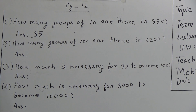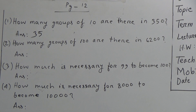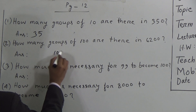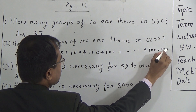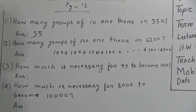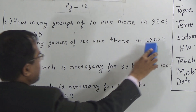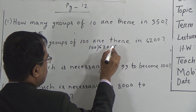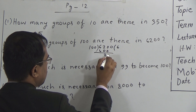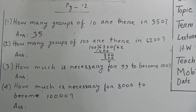Now question 2: how many groups of 100 are there in 6200? That means, for getting 6200, how many 100s have to be added? Similar to question 1, we divide 6200 by 100. In 620, we can give 6 times — that gives 600. Subtracting gives 200. Again, we can give 2 times — that gives 200. Subtracting gives 0. That means the quotient is 62. So the answer will be 62.